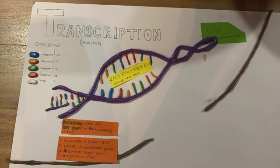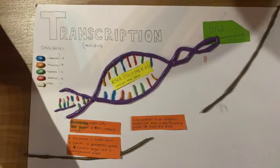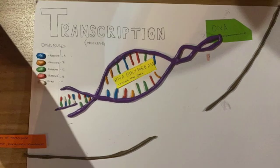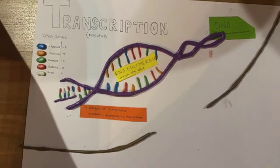Nucleotides are made up of three parts: a phosphate group, a carbon sugar, and a nitrogenous base. A nucleotide is an organic molecule that is the building block of DNA and RNA.